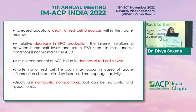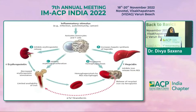Anemia is usually normocytic normochromic, but in severe cases it can be microcytic and hypochromic as well. This slide shows how an inflammatory stimulus can activate monocytes and T cells, further leading to overexpression of hepcidin in the liver, which inhibits iron absorption from the gut, increases macrophage activity and trapping of iron, and inhibits erythropoiesis proliferation and availability of erythropoietin in response to anemia.